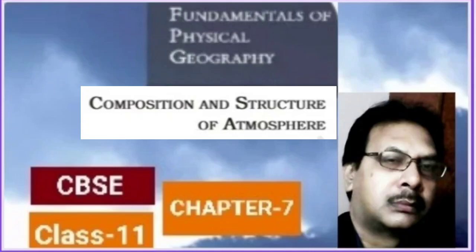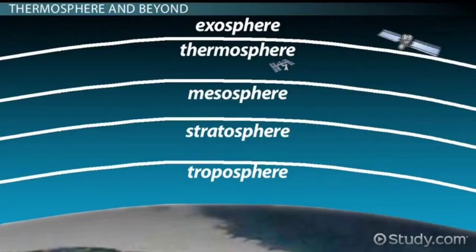If we consider the changes in the atmosphere with height, we come to know very interesting things about it. The average atmospheric pressure at sea level is about 1000 millibars, but as we go higher in the atmosphere, the atmospheric pressure decreases with increasing altitude. One half of the atmosphere lies below the altitude of only 5.6 kilometers.